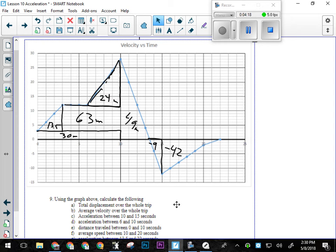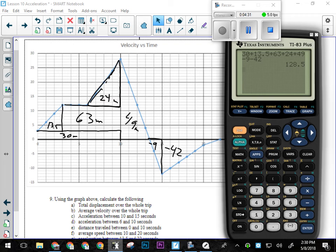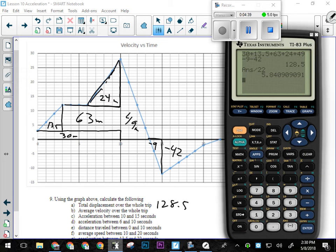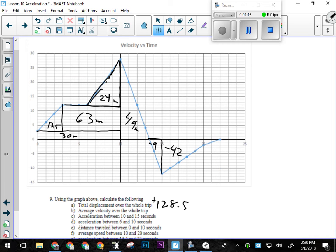And then our average velocity over the whole trip, how do I calculate that? So we'll have total displacement divided by total time, and my total time is 22 seconds. So I take this number that I just calculated and divide it by 22 seconds. So this was 128.5, and my average velocity is going to be positive 5.84 meters per second. This is meters.